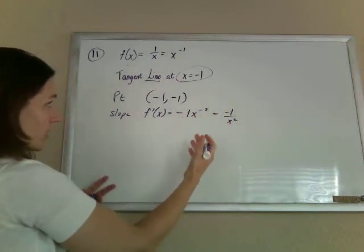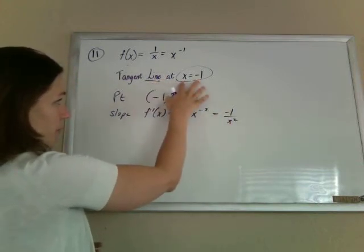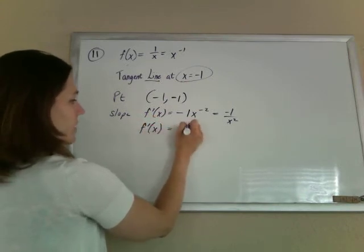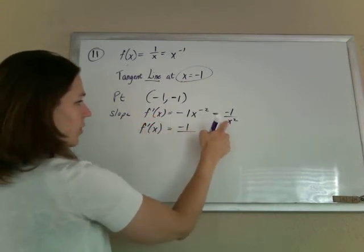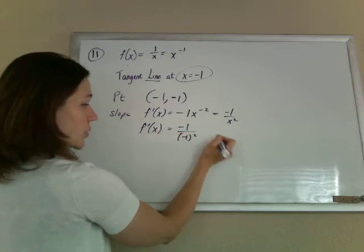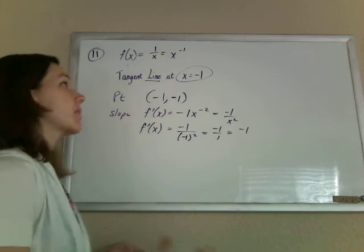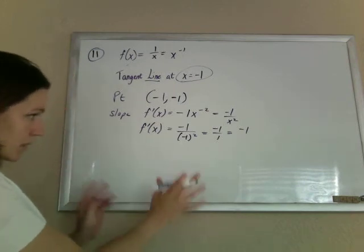And again, our equation for the line is supposed to have when x is negative 1. So the slope of this curve when x is negative 1 is negative 1 over negative 1 squared. So that's negative 1 over 1 is negative 1. Well, lots of negative 1s in this problem, but it works.